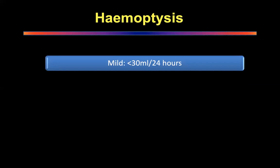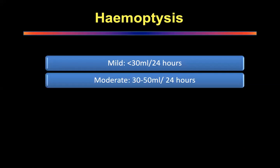There are various classifications: mild, moderate, severe, and exsanguinating. Mild is less than 30 ml per 24 hours — so if a patient reports streaking of blood, that's mild. Moderate is traditionally defined as 30 to 50 ml per hour.